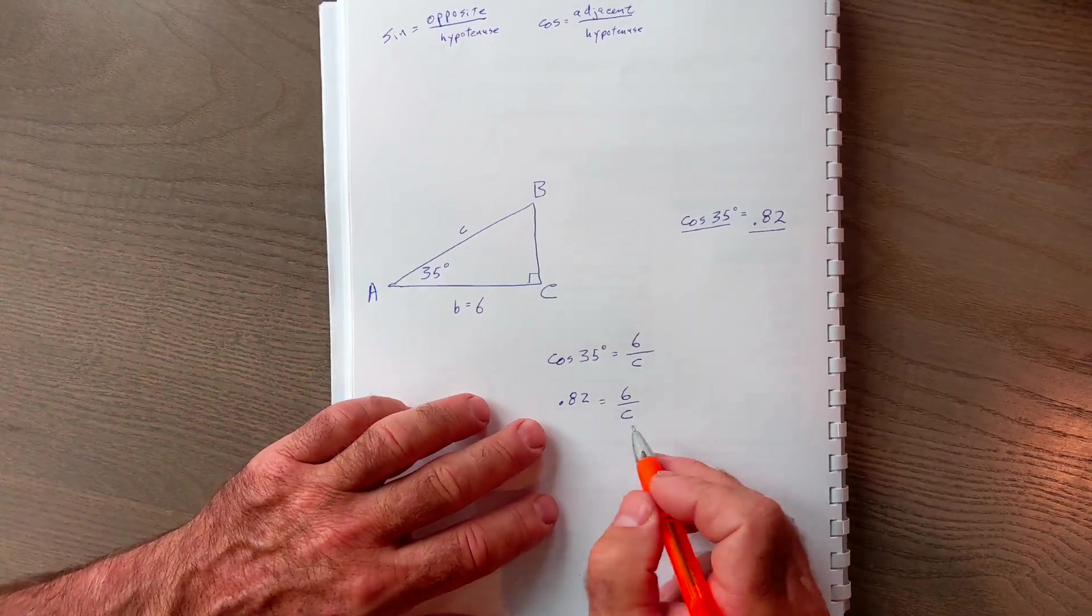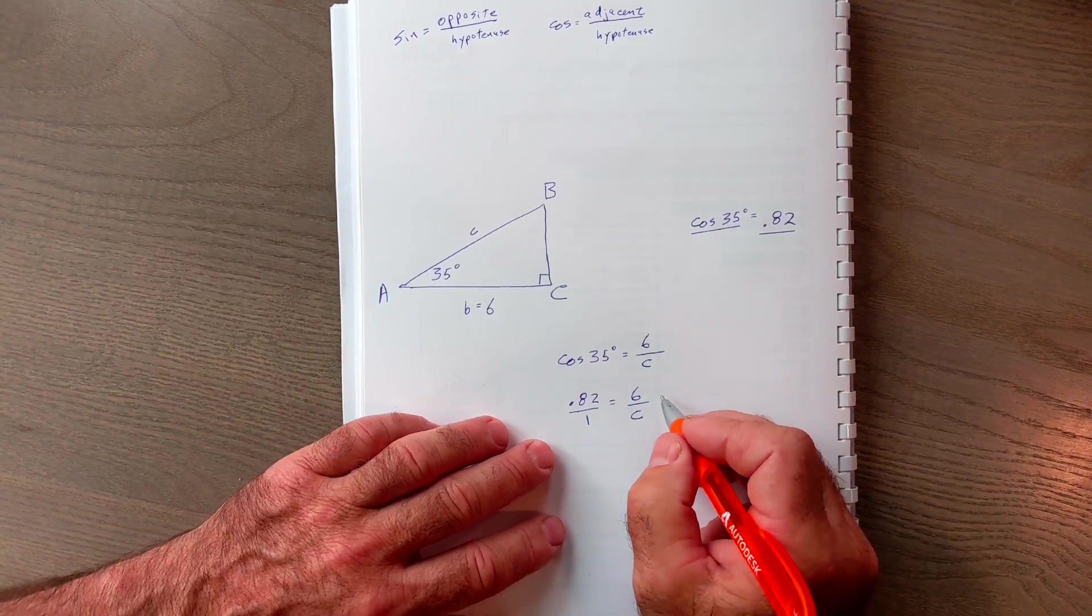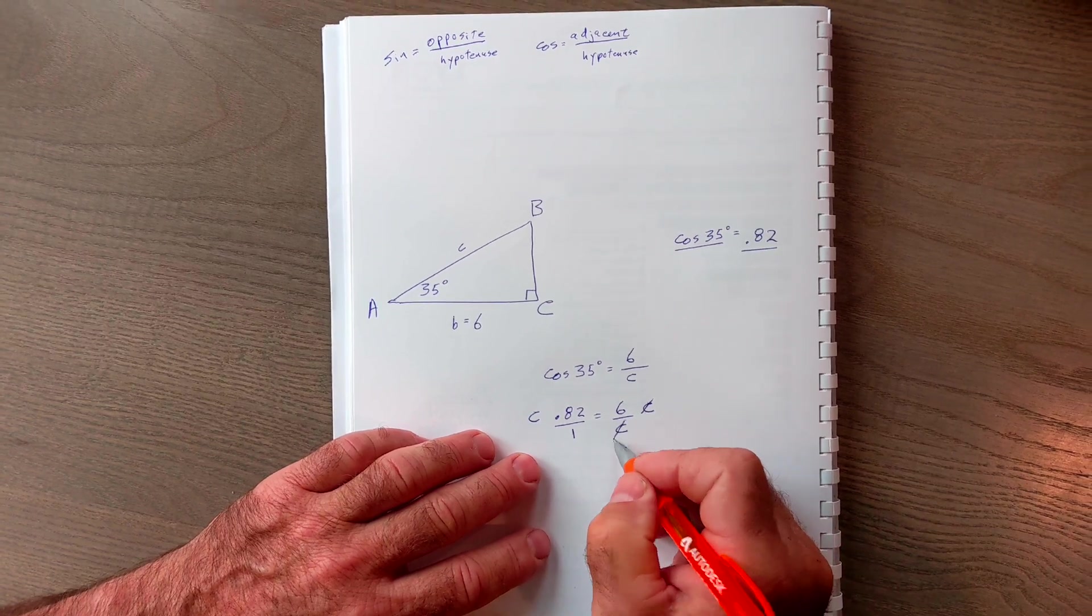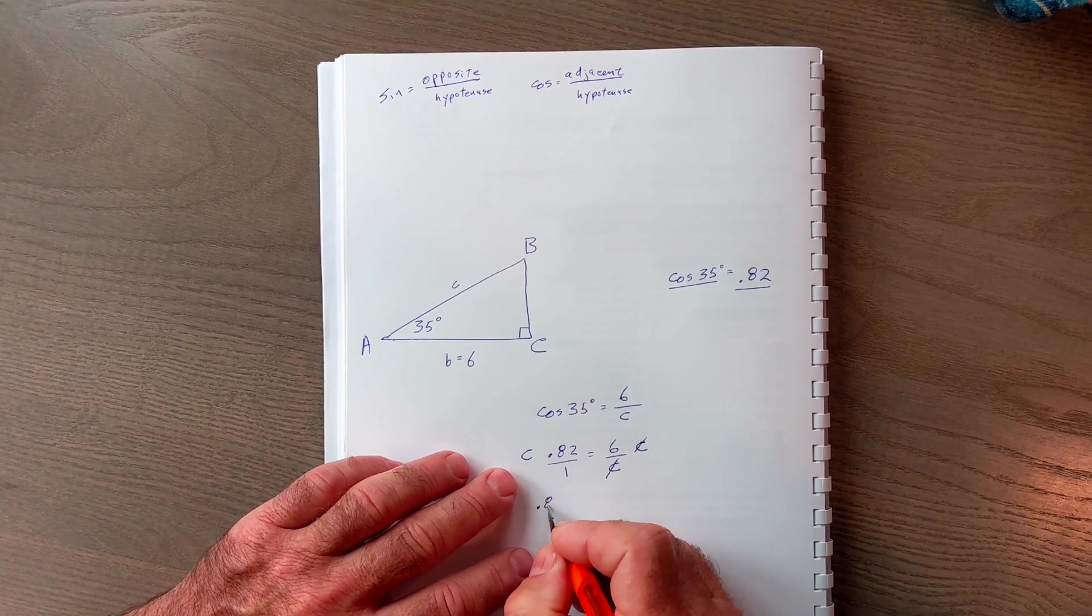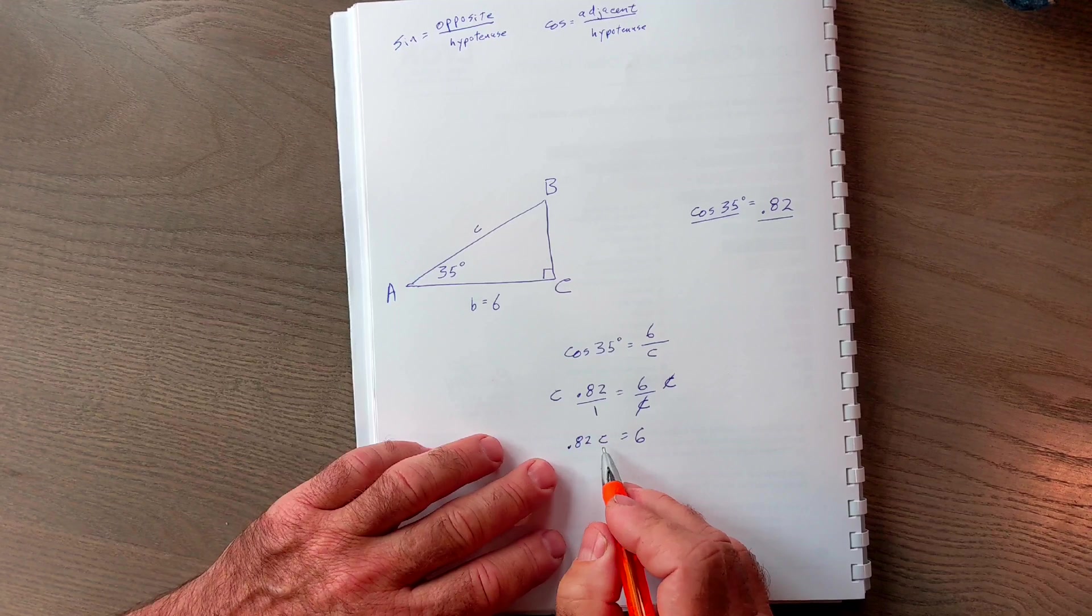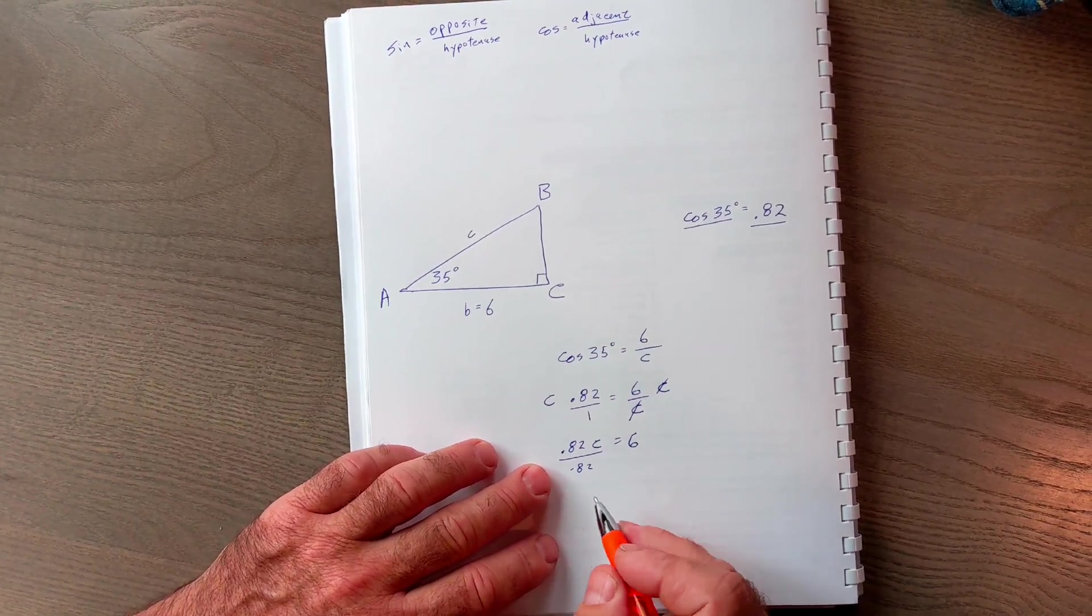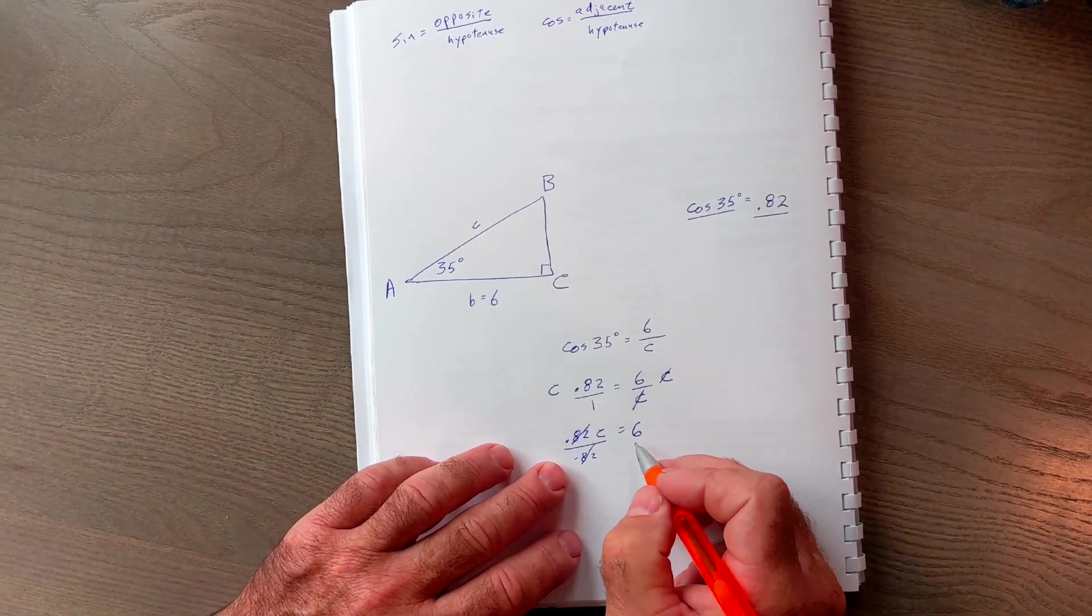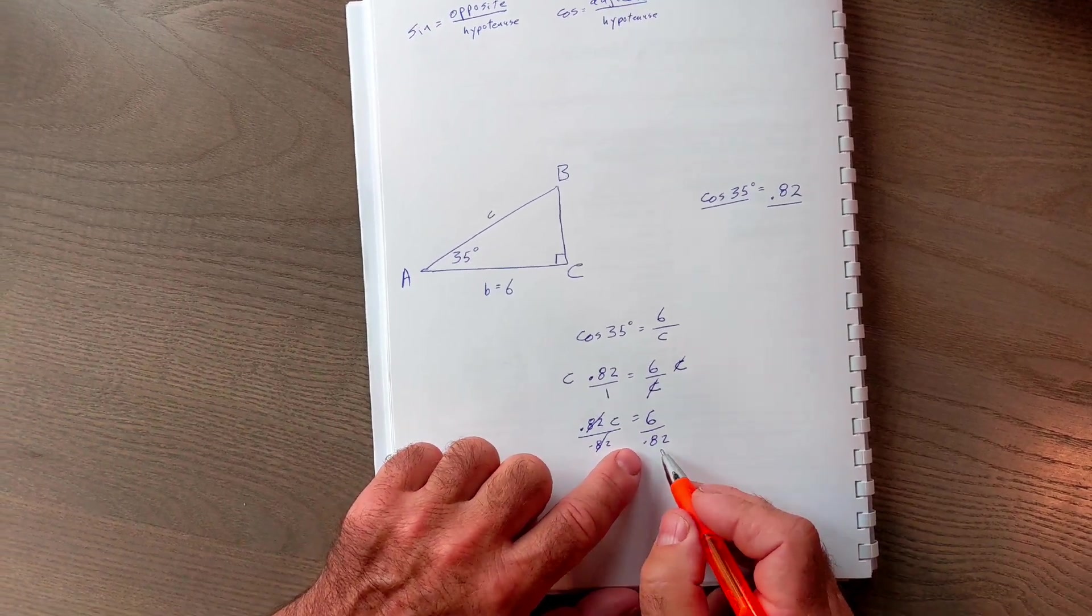I'm trying to isolate my variable C. Remember, all numbers can be fractions, just over 1. I multiply both sides of the equation by C. That allows me to cancel these C's here and put it over here. Now I have 0.82 times C is equal to 6. Still isolating my variable C, I divide both sides by 0.82. That's going to allow me to get C by itself, my goal. If I do that to the left side, I also do it to the right side.